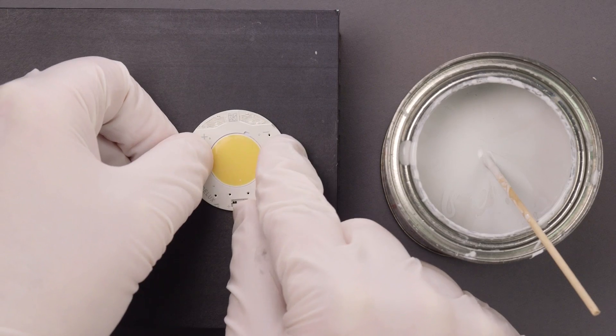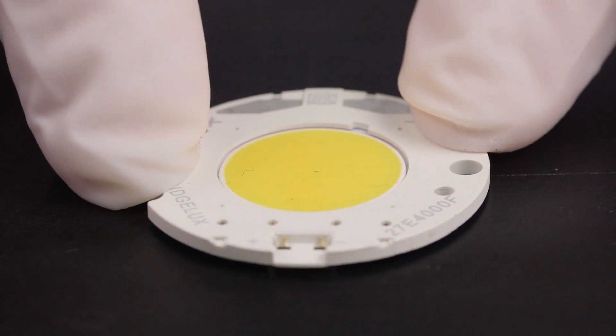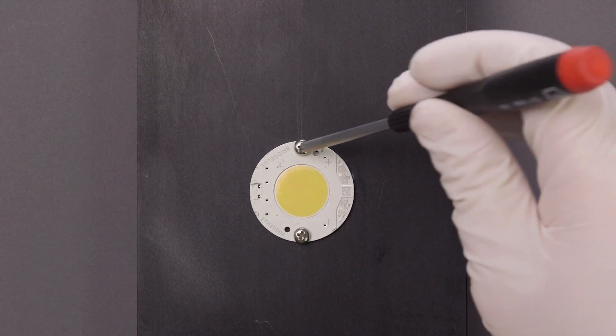When you mount the array to the heat sink, it is recommended that the array is rotated back and forth slightly to ensure the thermal grease is spread out. Appropriate torque should also be applied.